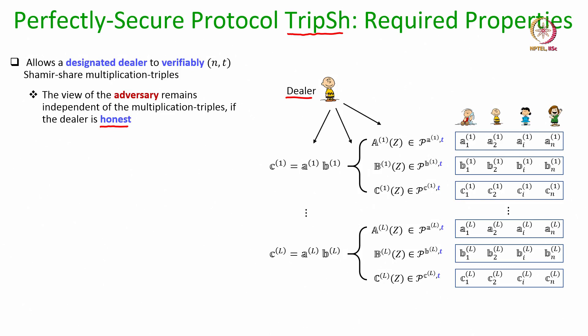It could be as if any triplet from the field has been secret shared by the dealer. That is the first requirement, and we also want the commitment property, which demands that even if the dealer is corrupt, it should be guaranteed that it has secret shared only multiplication triplets and not arbitrary triplets. That means it should be guaranteed that the C component of each of the triplets which the dealer has secret shared is indeed equal to the product of the corresponding A and B components.